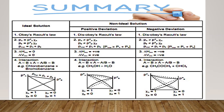Here is the summary: ideal solutions obey Raoult's law, while non-ideal solutions — both positive and negative deviation — do not. The differences can be summarized in terms of vapor pressure, ΔH_mixing, ΔV_mixing, molecular interactions, and graphical representations.